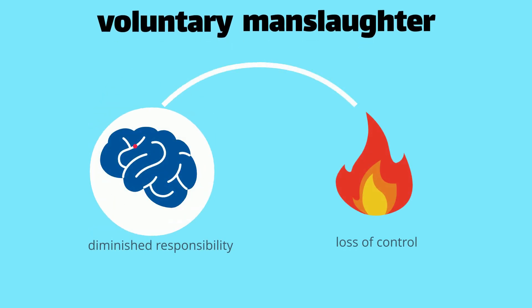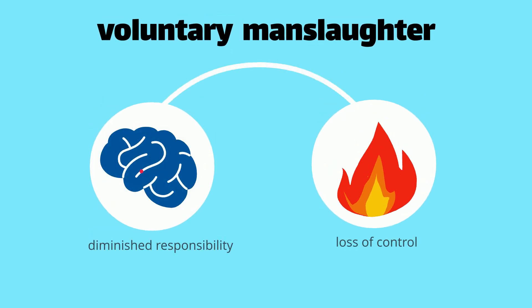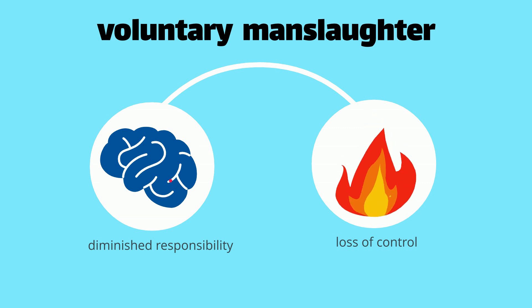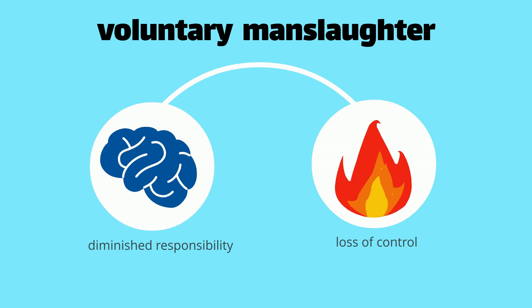Voluntary manslaughter, like diminished responsibility and loss of control, is considered when there are mitigating factors with murder which reduce its severity.